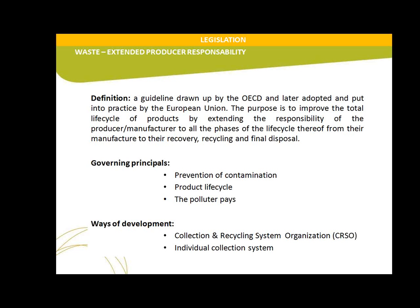Our governing principles are: prevention of contamination, product life cycle management, and the polluter pays. The ways to develop these systems are two: a collection and recycling system organization (CRSO) — which is what Ambilamp is — or an individual collection system developed by only one producer. More than 99 percent of producers in Spain and Europe selected the first option and created collection and recycling system organizations. A CRSO is a non-profit organization formed by producers with the objective of creating a structure that fulfills all financial, operational, legal, and informative requirements established in the regulations.